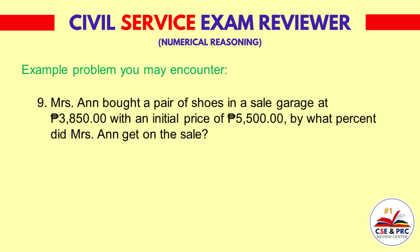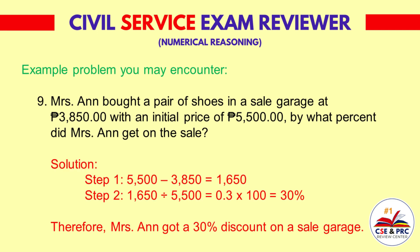Number 9: Mrs. Santos bought a pair of shoes at a sale for 3,850 pesos with an initial price of 5,500 pesos. By what percent did Mrs. Santos save on the sale? Solution: Step 1 — 5,500 minus 3,850 equals 1,650. Step 2 — 1,650 divided by 5,500 is equal to 0.3. 0.3 times 100 equals 30 percent. Therefore, Mrs. Santos got a 30 percent discount on the sale.